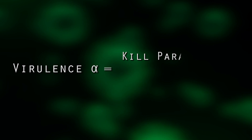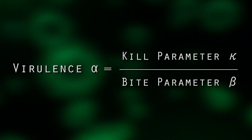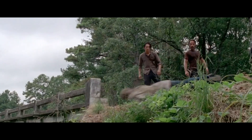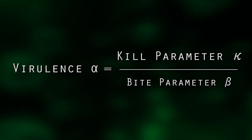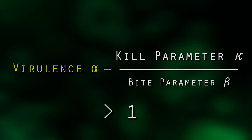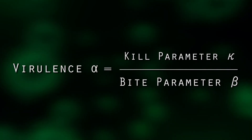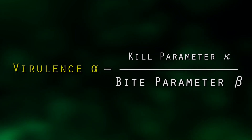These numbers are completely of our decision, depending on how strong the zombies are. In general, we define virulence alpha as the kill parameter kappa over the bite parameter beta. If the zombies are as weak as the ones in The Walking Dead, then they will be killed faster than they can bite, and alpha will become larger than one — in this case, a zombie outbreak can be contained very easily. However, if the zombies are as fierce as the ones in 28 Weeks Later, then kappa will be smaller than beta, and alpha will become less than 1, meaning a zombie outbreak will become a zombie apocalypse.